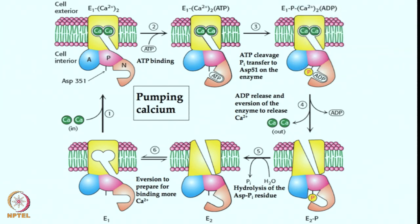There is a similar pump for calcium, which you can call the calcium pump. This is the cell exterior and this is the cell interior. Aspartate 351 is the ATP binding site — ATP binds in the pocket and calcium gets into this cavity, wherein ATP cleavage and phosphoryl transfer to aspartate 351 on the enzyme occurs. This phosphate transfer upon ATP binding leads to ADP and phosphate generation, and this energy-driven process releases the calcium outside the cell.